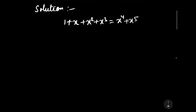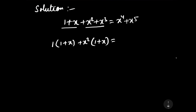Let us factorize it. From 1 plus x we can take out 1 as common, writing it as 1 into (1 plus x). From x squared plus x cubed we take x squared as common. On the right side, from x to the power 4 plus x to the power 5 we take x to the power 4 as common, writing it as x⁴ into (1 plus x).